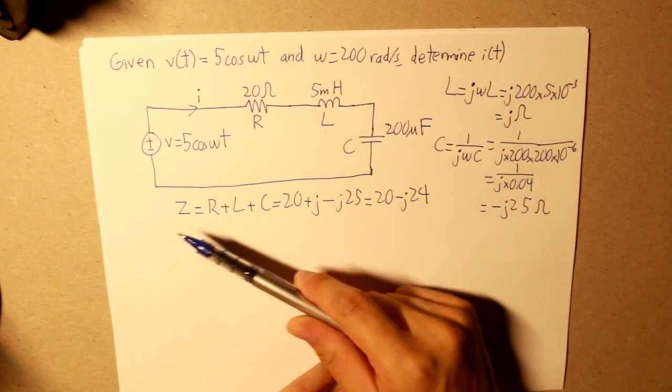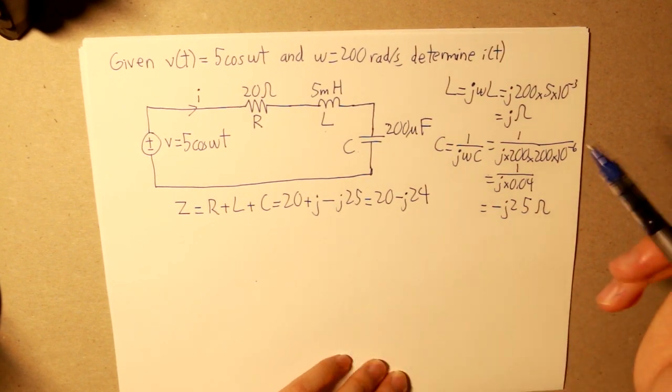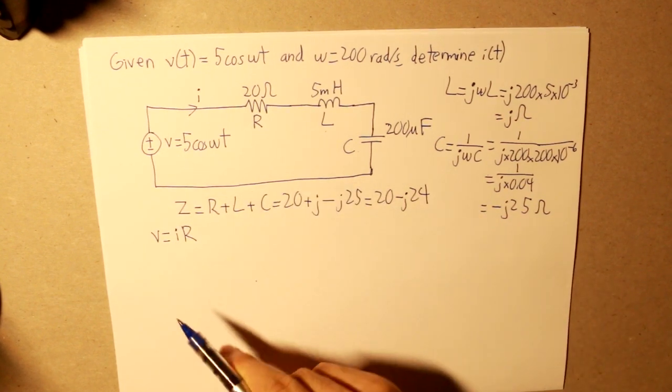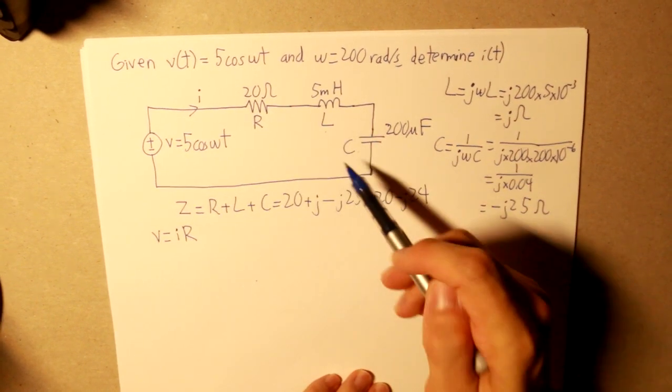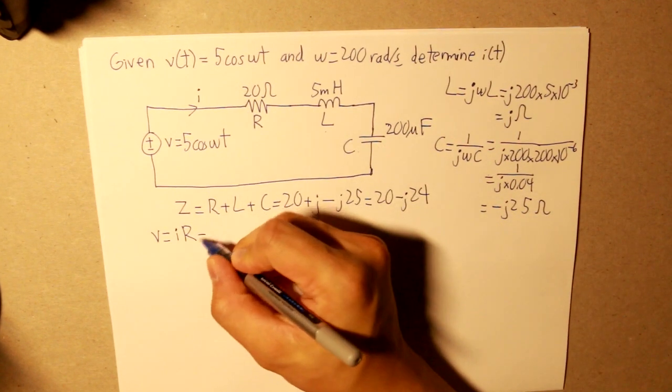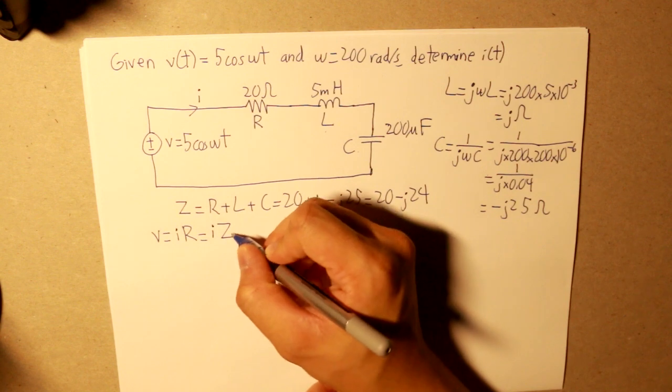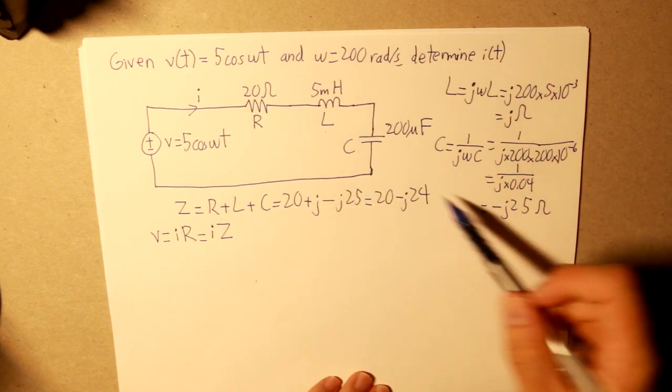Now you may be wondering, why did I calculate the impedance? Well, what we know by Ohm's law, that V is equal to the current multiplied by the resistor. In this case, since we have inductor, inductance, and capacitance, that will be simply equal to the current multiplied by the impedance. And that impedance, well, we just calculated right here.